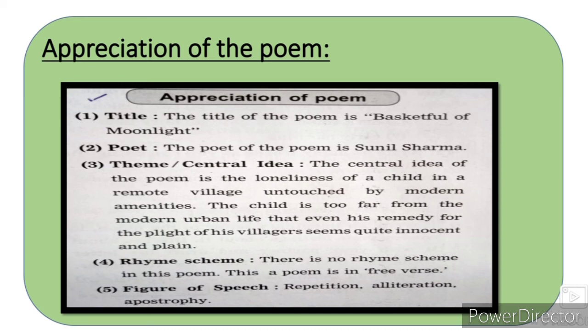Appreciation of the poem: The title of the poem is 'Basket Full of Moonlight'۔ پہلے syllabus میں 10 points تھے لیکن اب صرف 5 marks کے لیے 5 points لکھنے ہیں۔ Poet کا نام: Sunil Sharma۔ Central idea: 'The central idea of the poem is the loneliness of a child in a remote village untouched by modern amenities. The child is too far from the modern urban life that even his remedy for the plight of his villagers seems quite innocent and plain.'